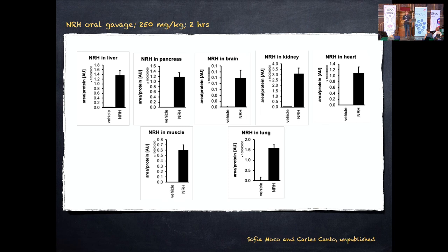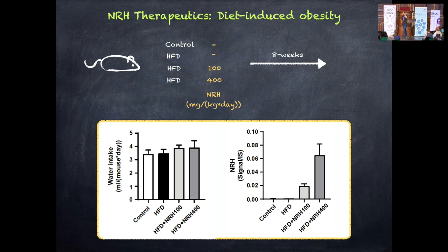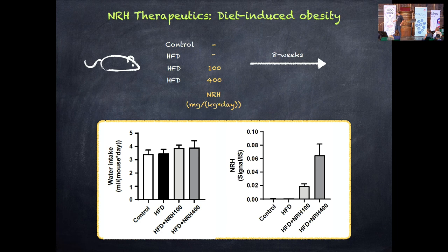With this in mind, we asked: is NRH therapeutic? We took the general approach of a high fat diet paradigm — control mice, high fat diet mice, and high fat diet mice treated with 100 or 400 mg/kg/day of NRH — given through drinking water for 8 weeks. There was no taste aversion; all groups drank similarly. NRH in plasma showed a nice dose-response increase as expected.